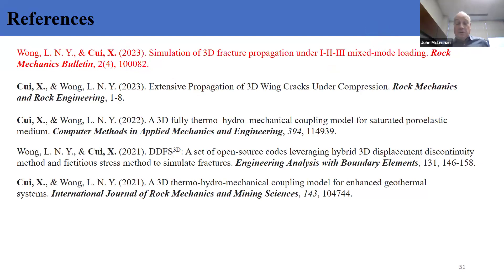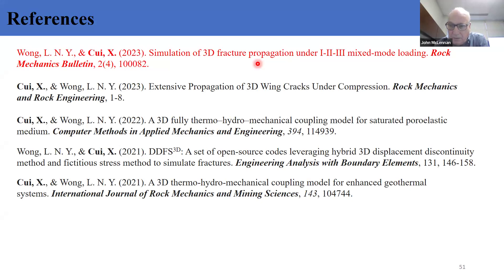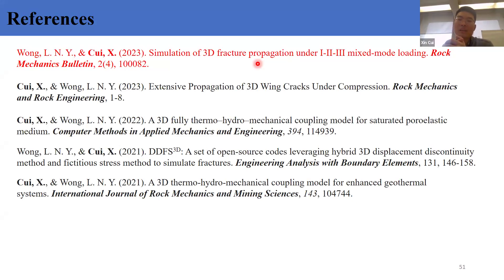Thank you very much, Xin — you generated a lot of questions and a lot of interest. The first series of questions were from Joseph, who wonders about incorporating fluid leak-off into a model like yours, and whether the effective stress at the tip is relevant. Regarding leak-off — it is not considered in the current model, but in the mass conservation equation you could include it. Regarding effective stress — yes, in the HM coupling process effective stress is used to drive the propagation of fractures.